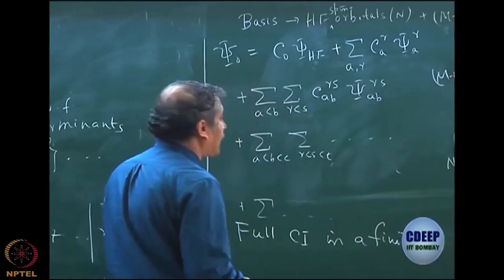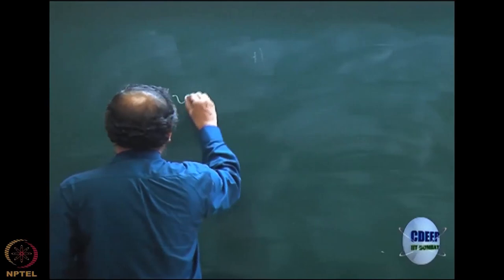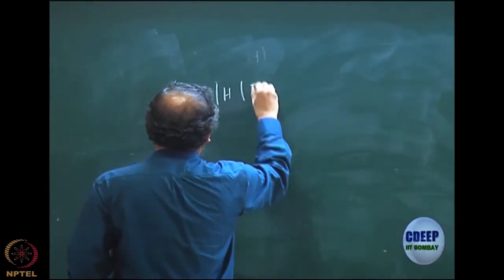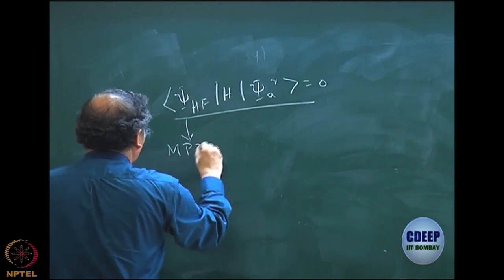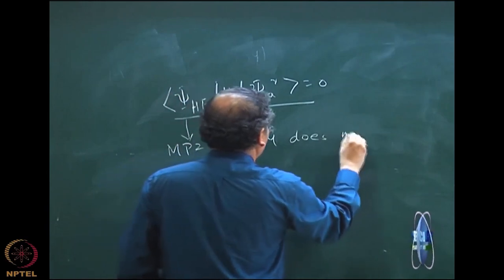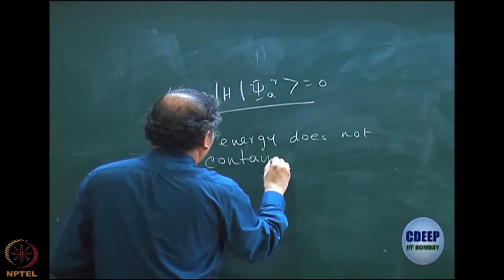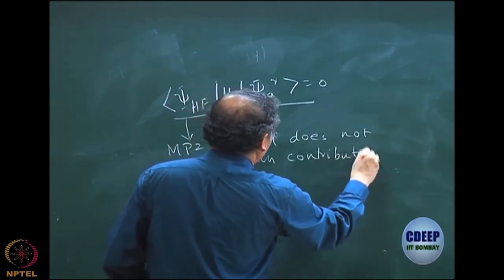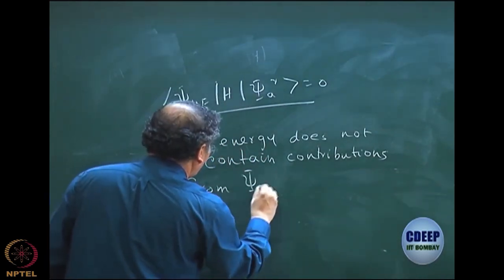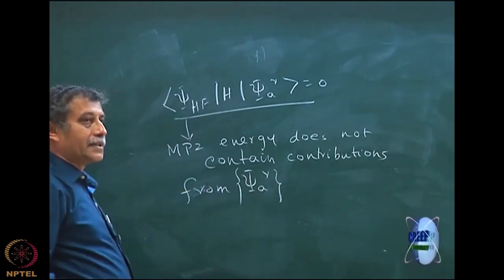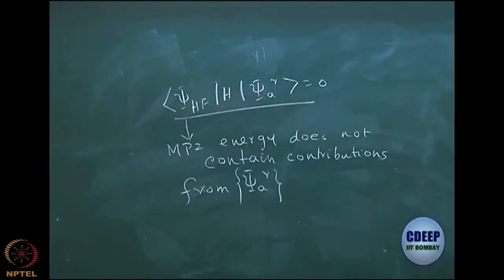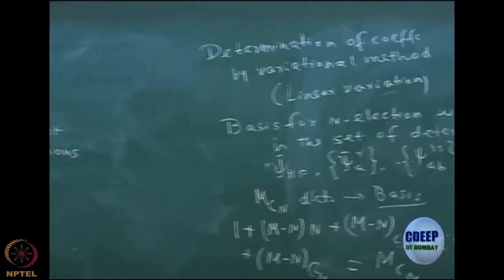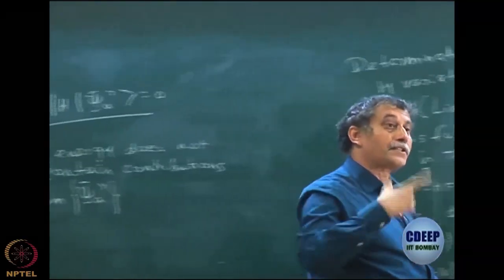The second point to note is Brillouin's theorem: psi Hartree-Fock, Hamiltonian, psi AR equals 0. Because of this, the MP2 energy does not contain contributions from any singly excited determinant psi AR. This is because the MP2 form had a Hartree-Fock–Hamiltonian–excited-determinant matrix element, which is zero by Brillouin's theorem. However, when writing CI, note that my exact wave function will contain singly excited determinants — there is no reason to eliminate them.